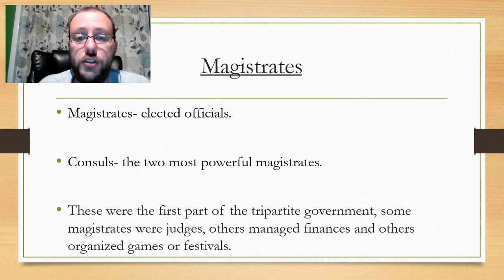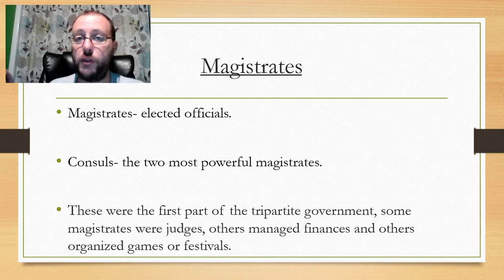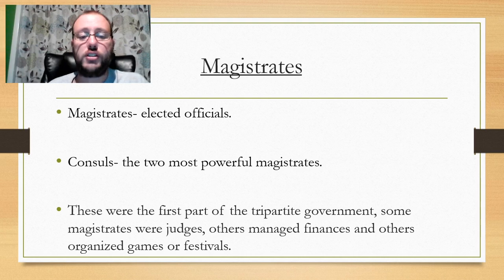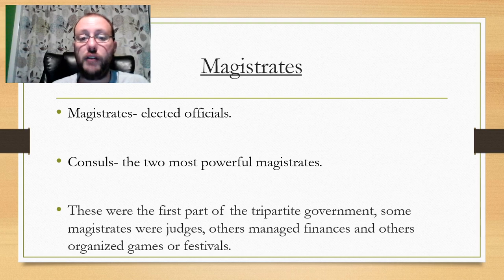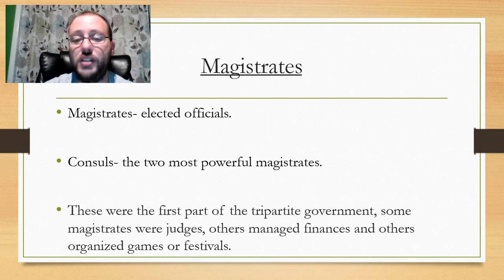The first part was magistrates, which were elected officials — people they elected into a position. Over all the magistrates, you had two powerful magistrates called the consuls, which was going to be very important later on. Some magistrates were judges, others managed finances, and others organized games or festivals. It's like public servants today — mayors, city council members, governors. They deal with the government and everyday things.